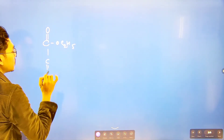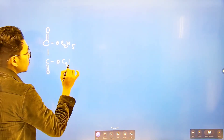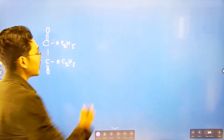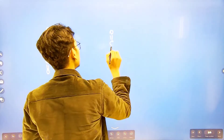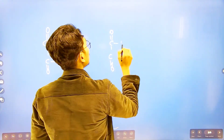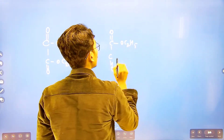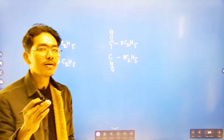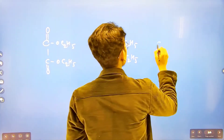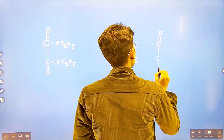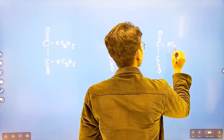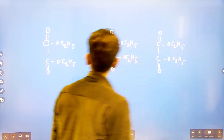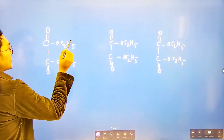Diethyl oxalate structure: C2H5-O-CO-CO-O-C2H5. The two ethyl groups are attached via ester linkages to the oxalate core (C double bond O, C double bond O). That is why it is called diethyl oxalate.